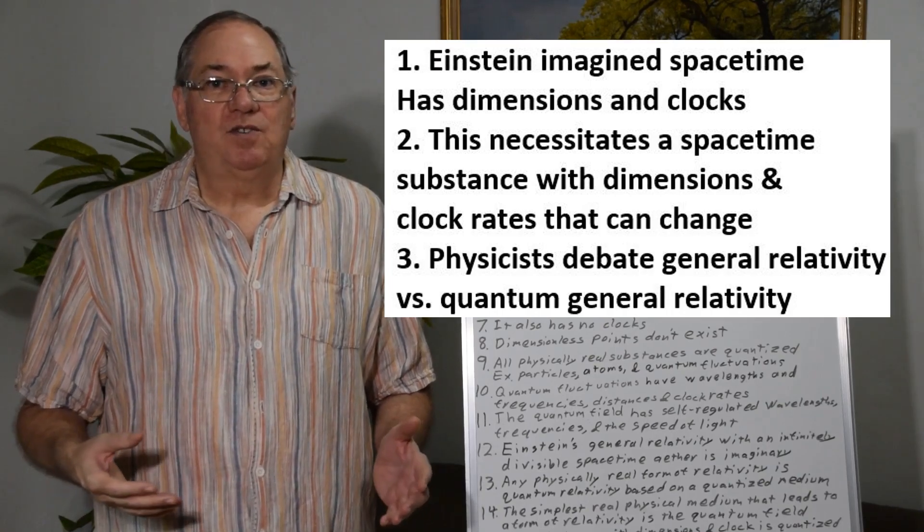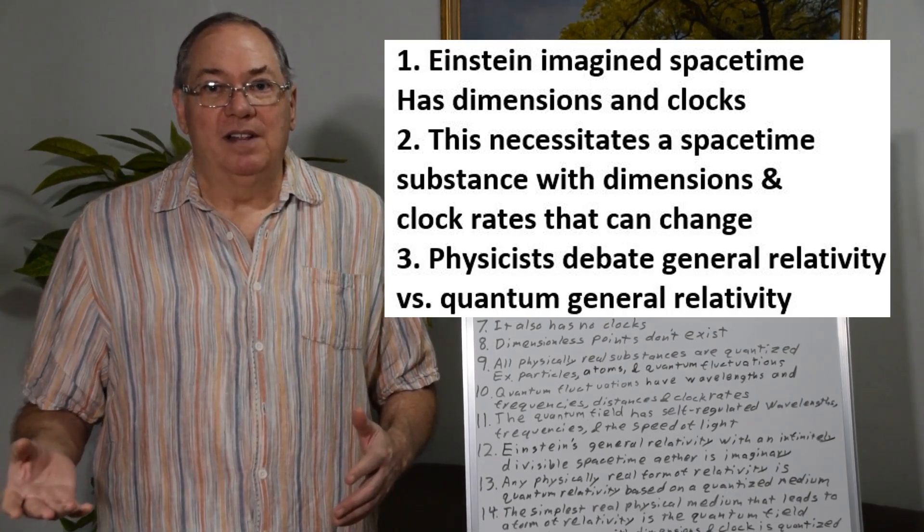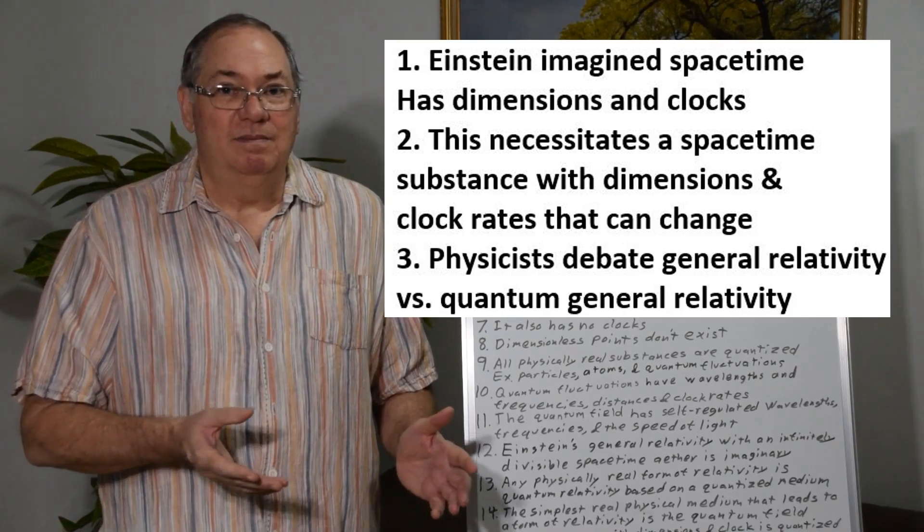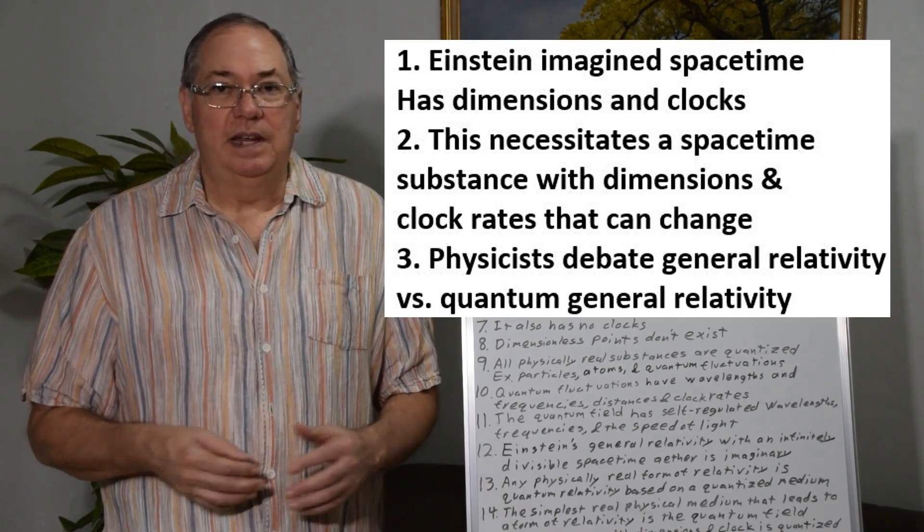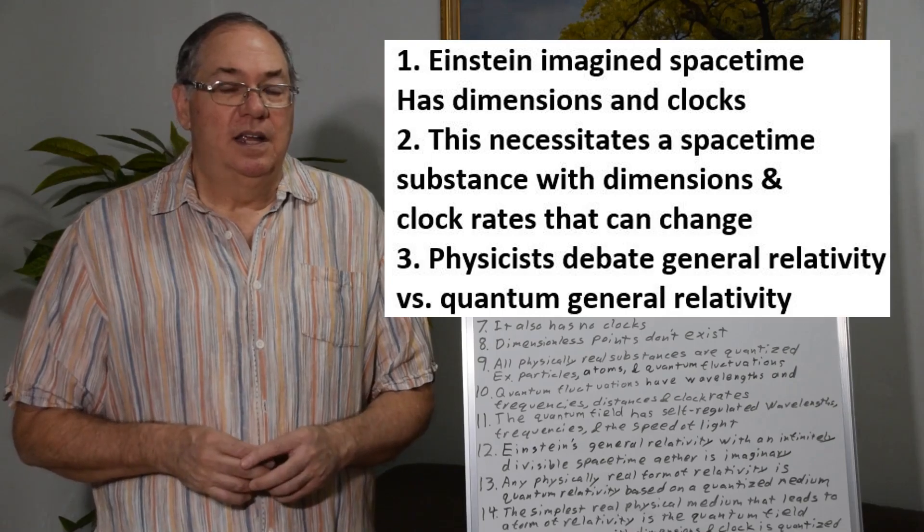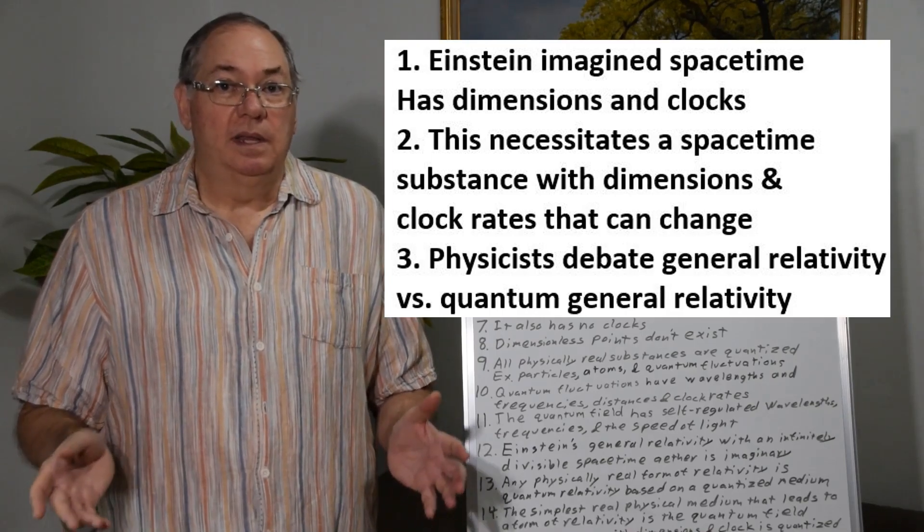And physicists try to work on a version of quantum general relativity that correlates with Einstein's version of relativity in order to unify quantum electrodynamics with gravity.